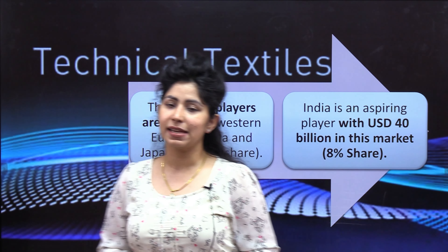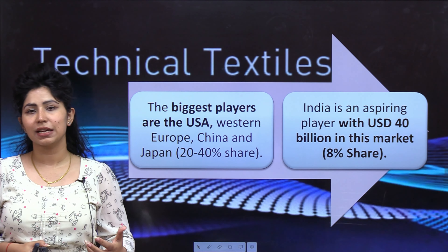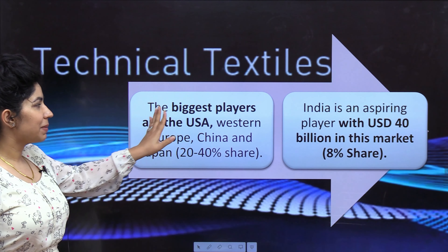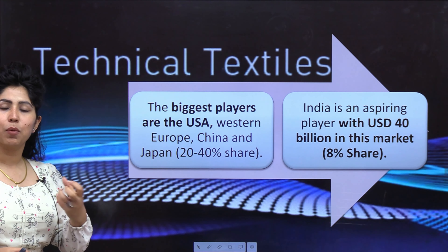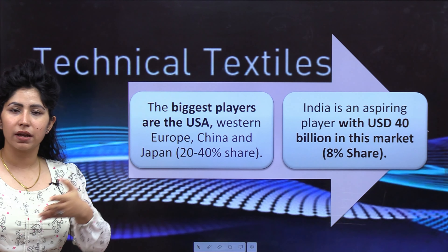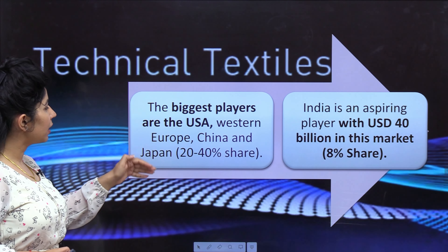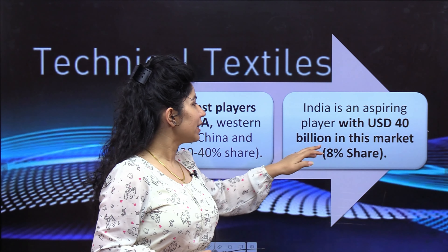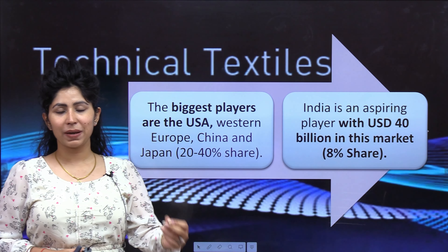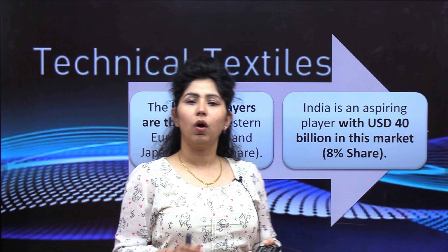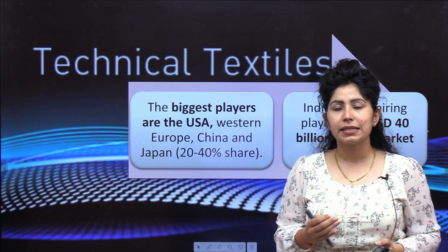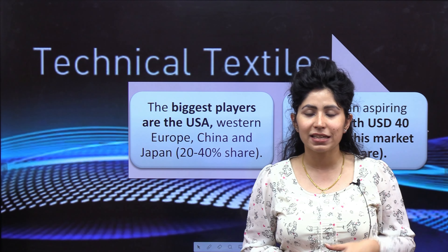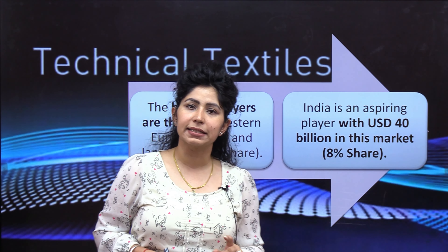Now what is India's share in technical textiles, and how much do other countries have? The biggest players are USA, Western Europe, China, and Japan, with a 20–40% share each. India's share is 8%, with USD 40 billion in this market — so India is an aspiring player. But India already has a very booming textile industry, making a shift to technical textiles easier, which can also create emerging jobs. India has taken this very seriously and aims to increase its market share in technical textiles.